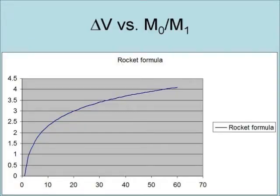When you graph the rocket formula based on propellant, you see that the curve flattens out. As a result, there is a diminishing return that results from adding more propellant, such that all rockets have a maximum change in velocity that they can achieve regardless of how much propellant the rocket carries.